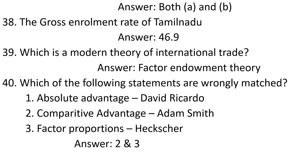Question 38: The gross enrollment rate of Tamil Nadu. Answer: 46.9. Question 39: Which is a modern theory of international trade? Answer: Factor endowment theory. Question 40: Which of the following statements are wrongly matched? 1. Absolute advantage — David Ricardo. 2. Comparative advantage — Adam Smith. 3. Factor proportions — Hicks. Answer: 2 and 3.